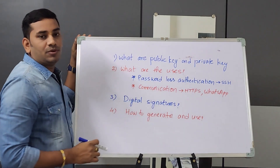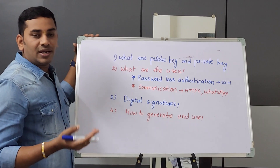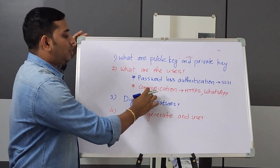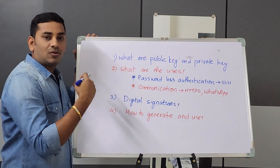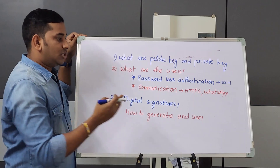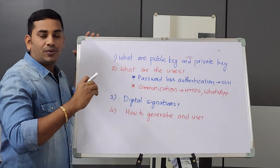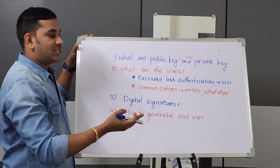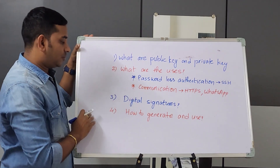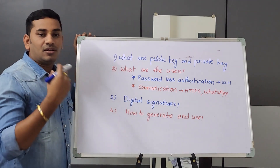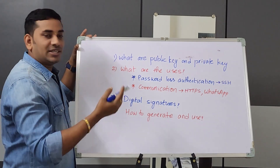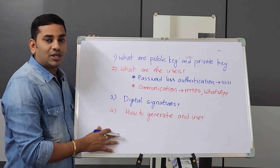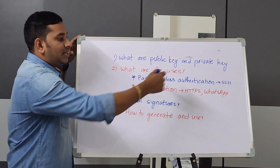We use passwordless authentication. For example, you can connect to a server in DevOps using SSH. We also use it to communicate via HTTPS and WhatsApp. HTTPS is also done with public and private key. End-to-end messages are encrypted — even WhatsApp doesn't have permission to see those messages. We can use public and private keys in digital signatures, document signing, and digital signature verification.